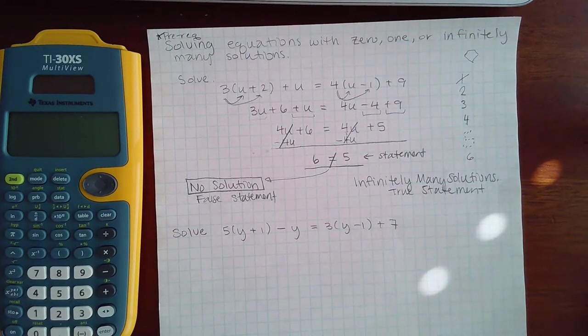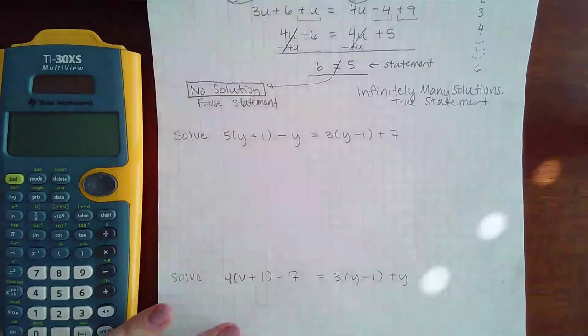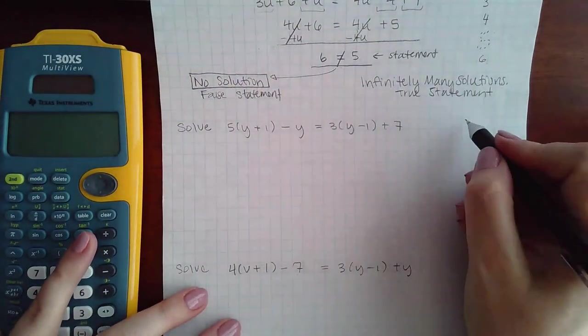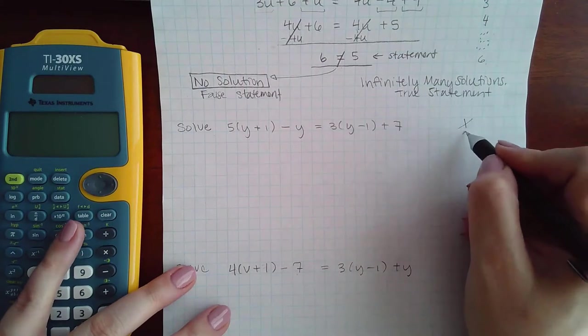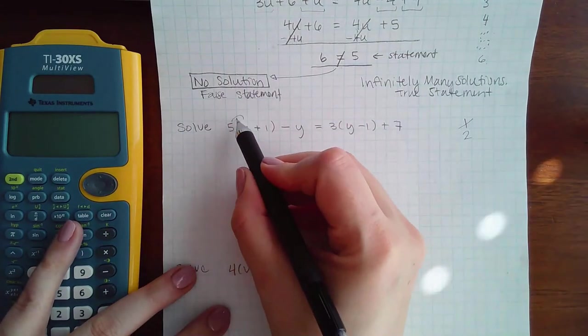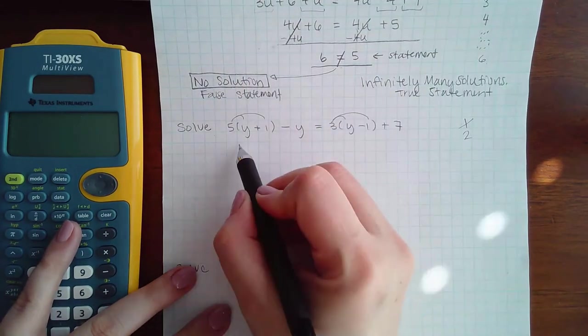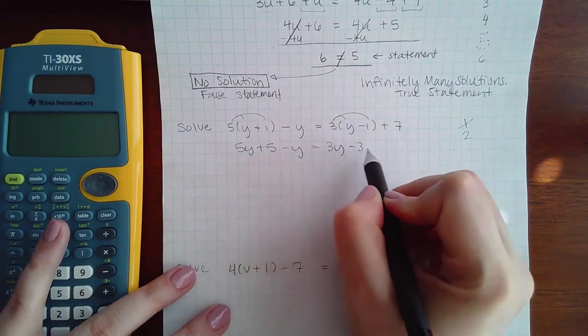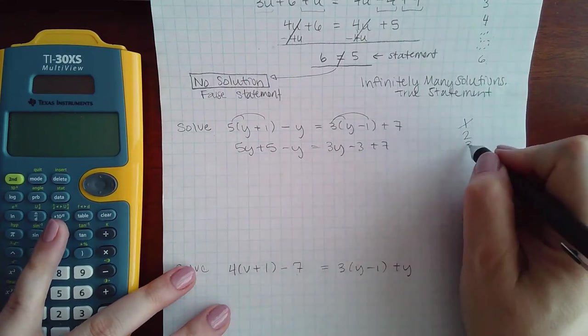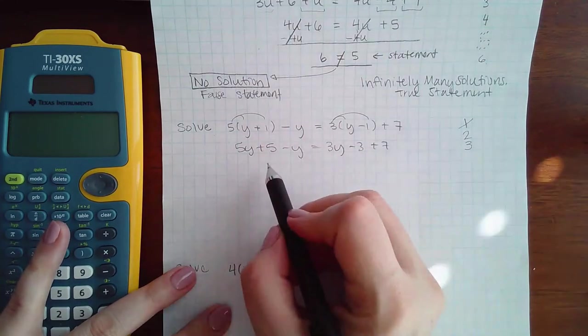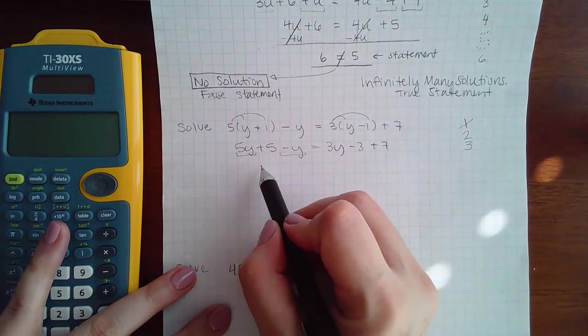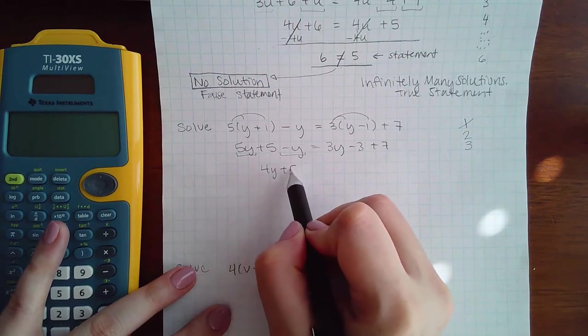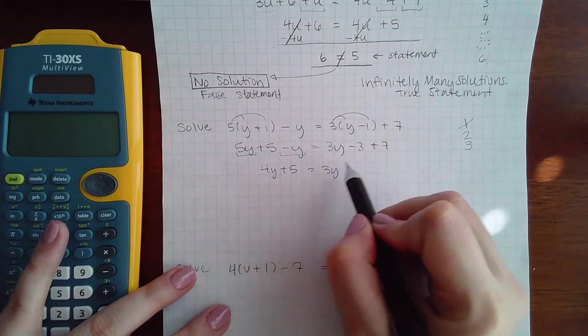Now let's go ahead and work out a couple more to see what happens. So again, step one, no fractions. Step two, let's eliminate the parentheses. We get 5(y+1) - y = 3(y-1) + 7, which becomes 5y + 5 - y = 3y - 3 + 7. Step three, combine my terms.